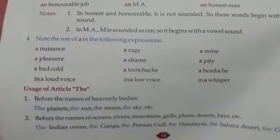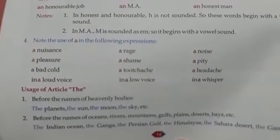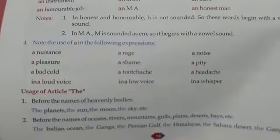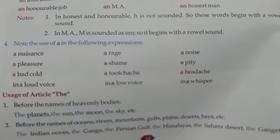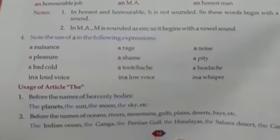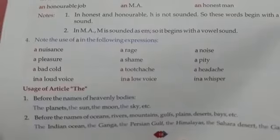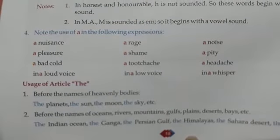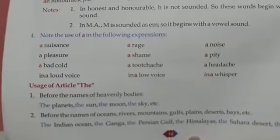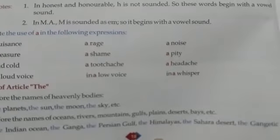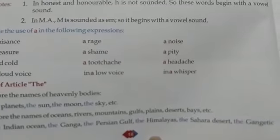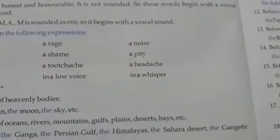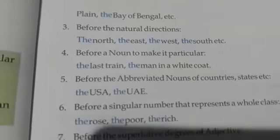Before the names of oceans, rivers, mountains, gulfs, plains, deserts, bays, etc., we have to use 'the' — like the Indian Ocean, the Ganga, the Persian Gulf, the Himalayas, the Sahara Desert, the Gangetic Plain, the Bay of Bengal, etc.